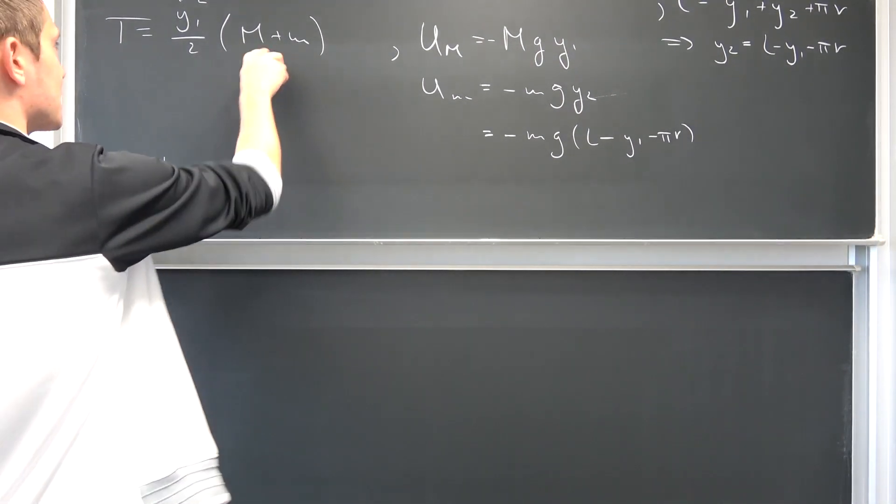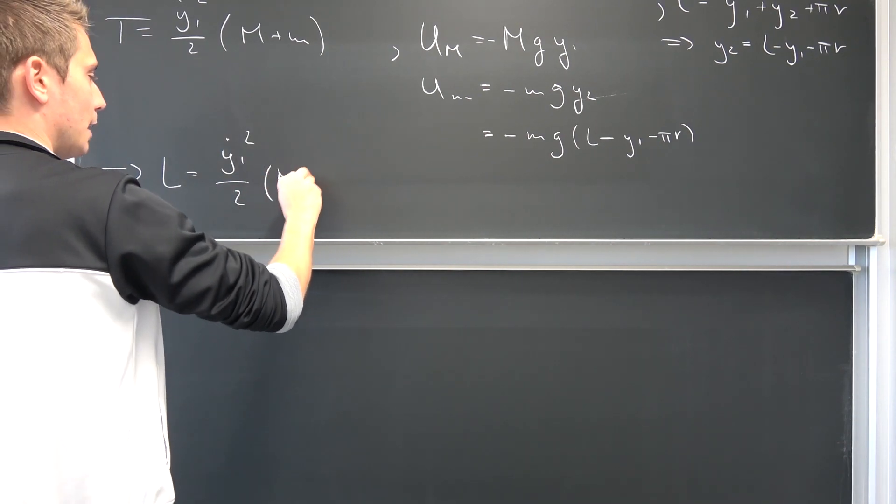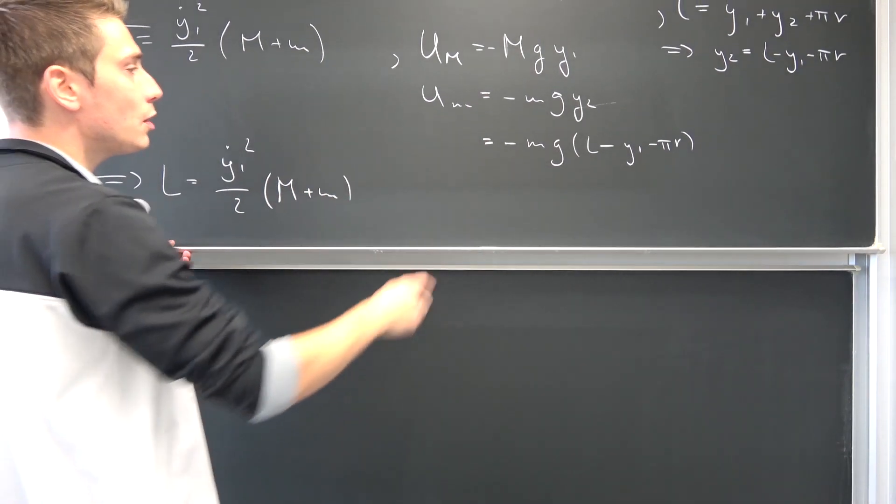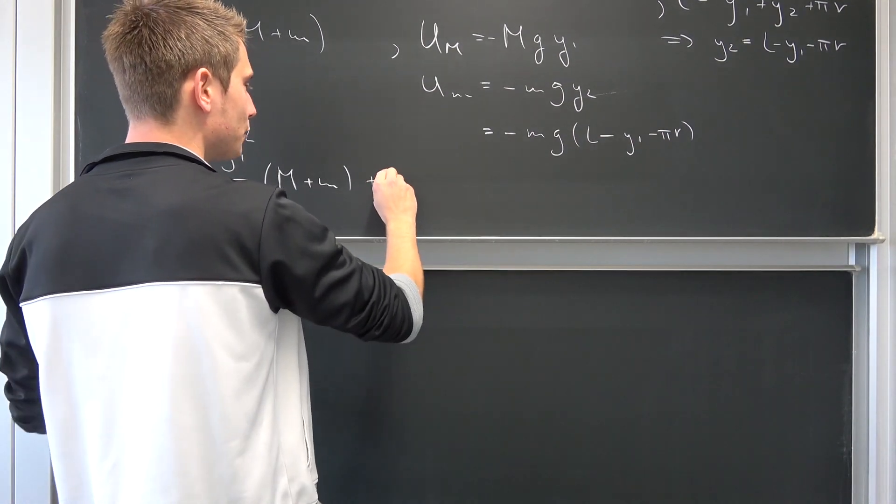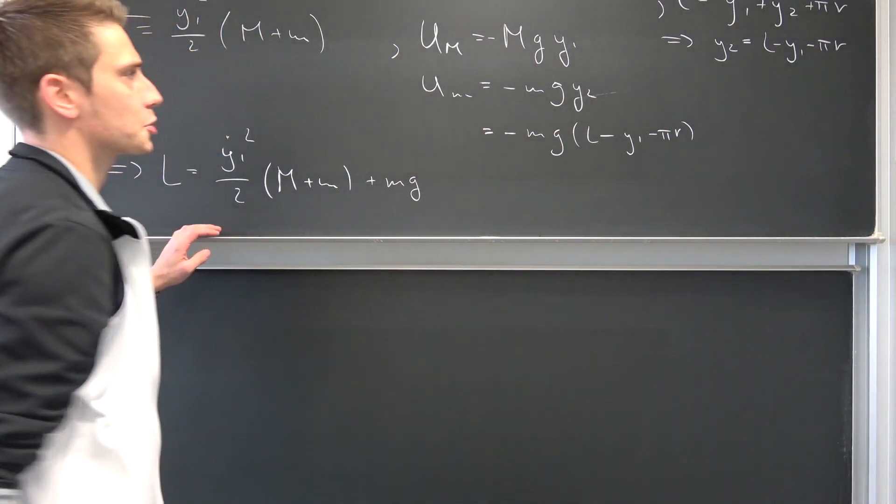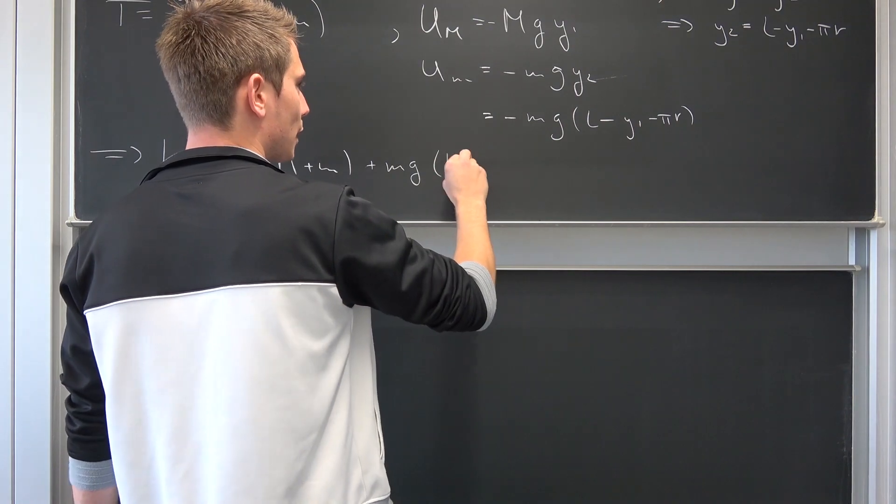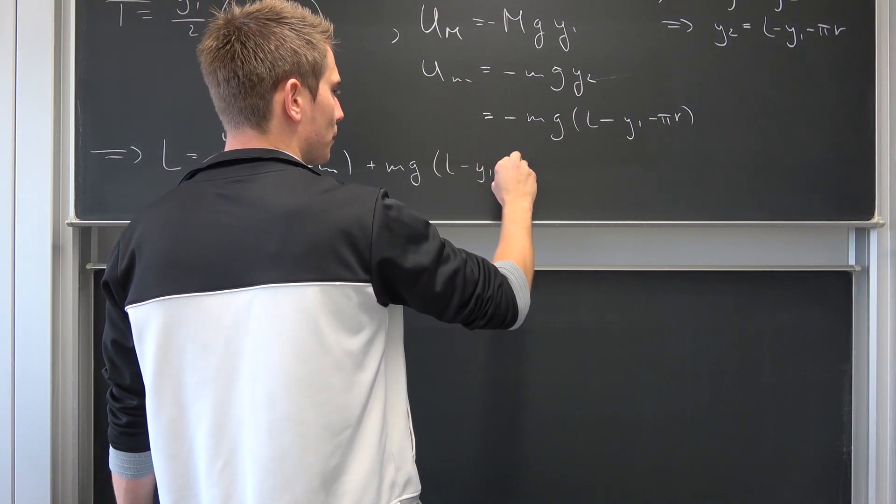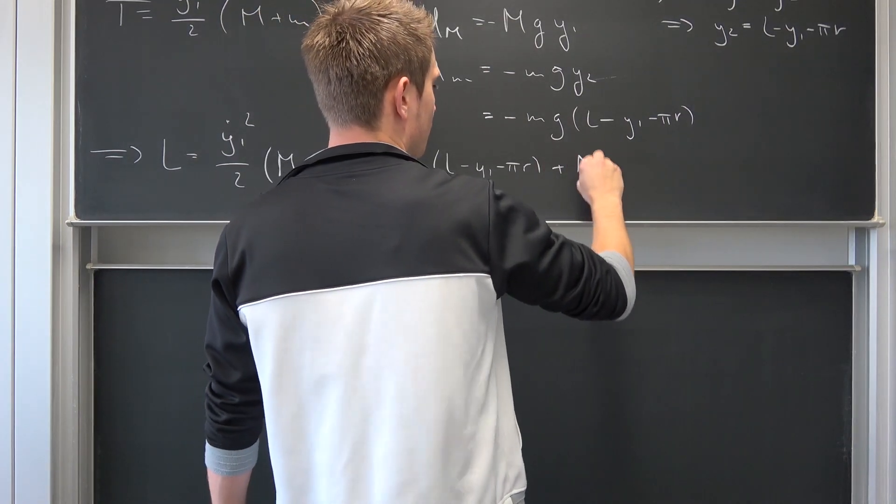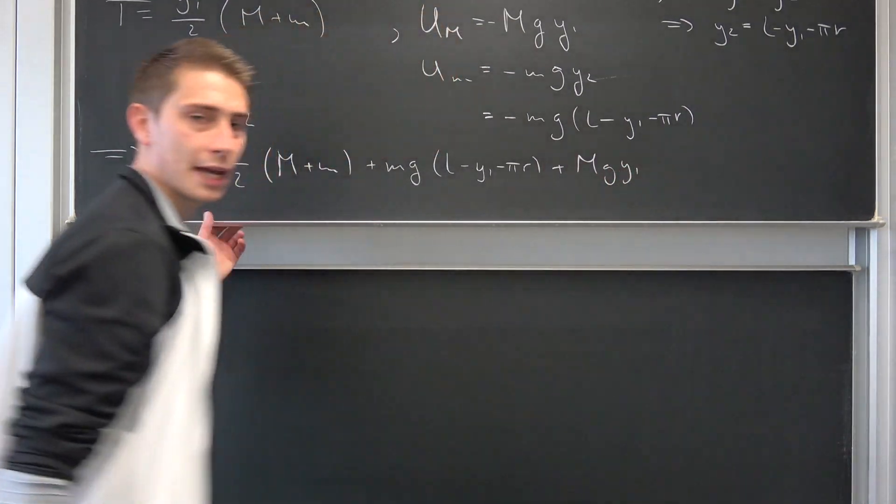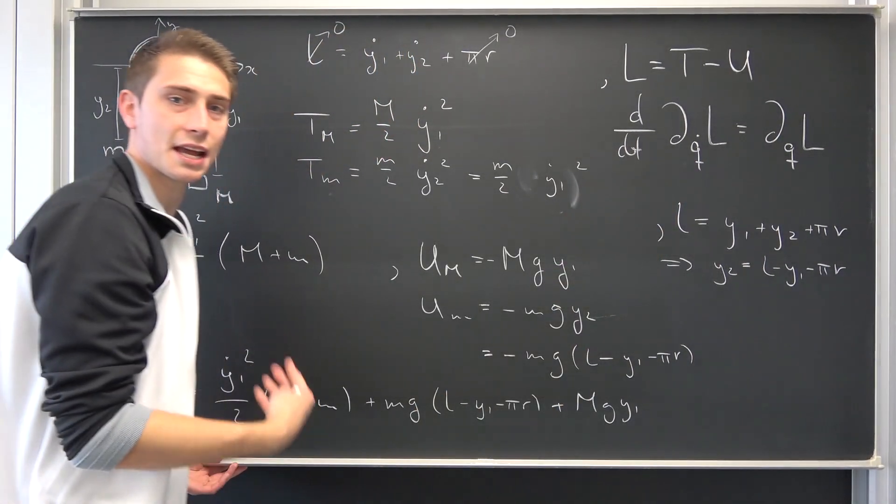Our Lagrangian is thus this piece right here. M plus m, and also minus those two added together. So this becomes positive M times g. And also I'm simply going to write everything out: L minus Y1 minus πR. And then we have positive M times g Y1. And now we can simply solve our Euler-Lagrange equations. And our Q in this case is this time Y1. It's our only constraint.